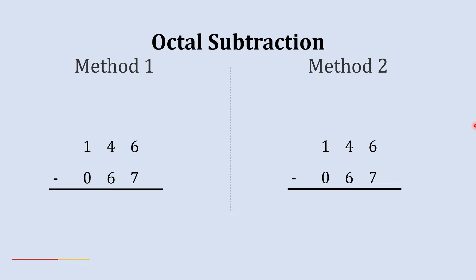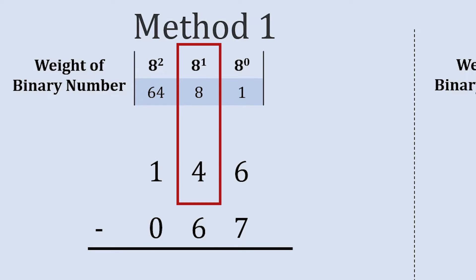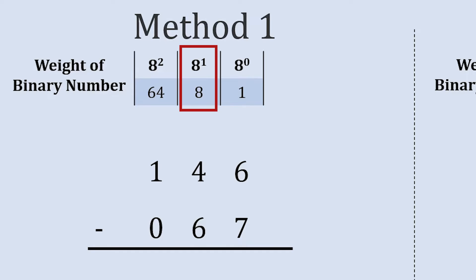Here we are going to subtract this 7 from 6, which is not possible. So we follow the same process as in decimal and binary subtraction — we ask for a borrow. In octal, when we borrow one from the next column, the weightage of that column is eight times higher than the previous one. So when we borrow one from the next column, the magnitude of that one becomes eight times higher, and that's why we write 8 here.